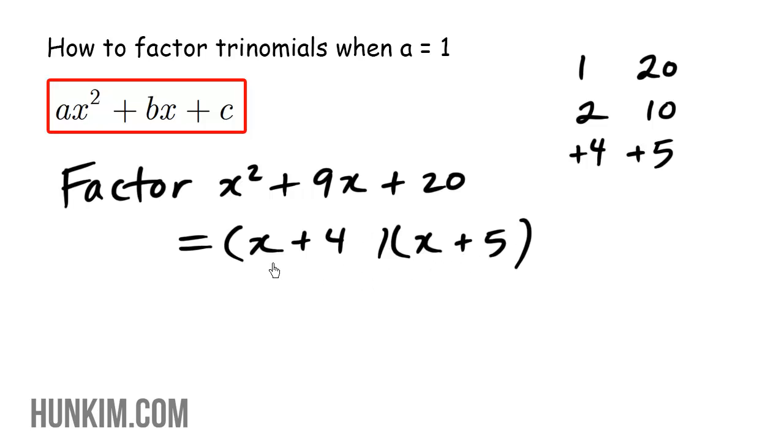You should FOIL it out. x times x is x squared. This here, using FOIL, is five x and inside is four x, which gives you nine x. And positive four times positive five indeed is positive twenty. So this here is the factored form.